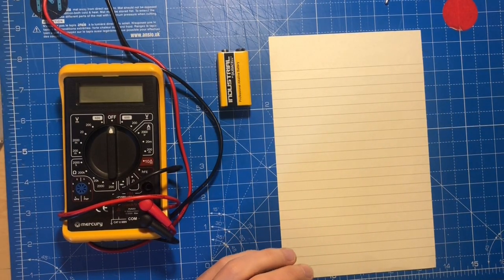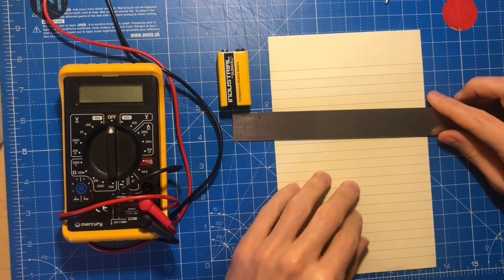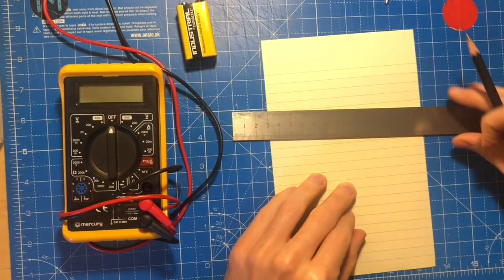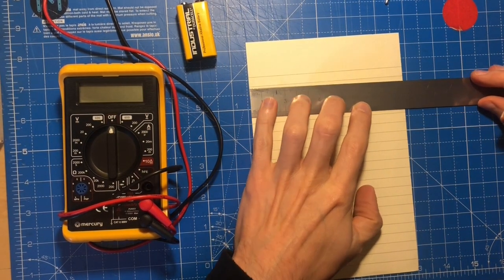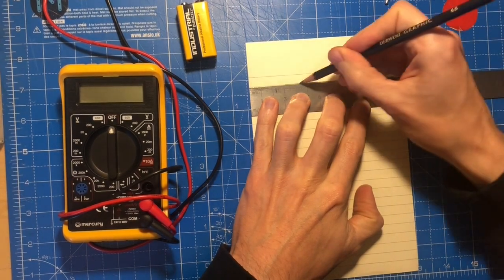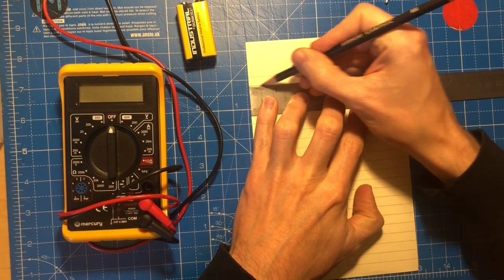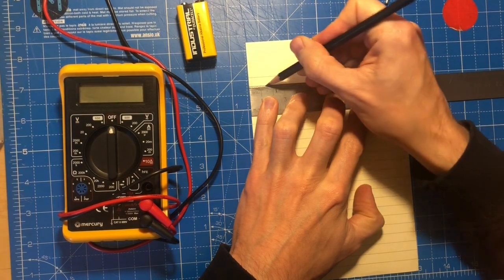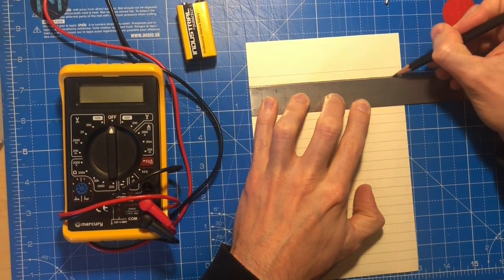Okay, so let's do this experiment to measure the resistance of some graphite on a piece of paper. I'm just going to take my ruler and draw a nice thick line of graphite. I'm going to go right to the edge so I can easily attach something to it.